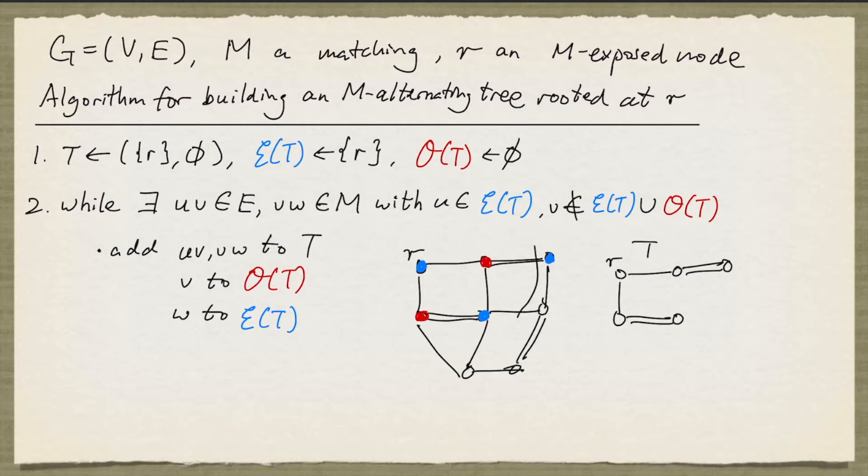And now we can add either this pair of edges or this pair of edges to T. I'm going to add the latter, so I'm going to add these two edges to T. This node is going to be added to the even set, and this node to the odd set. And we can see that we can't continue, so we stop here.